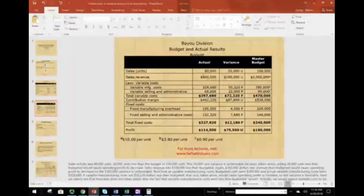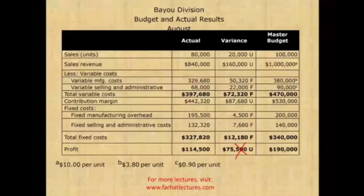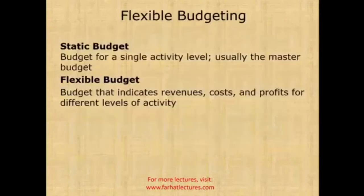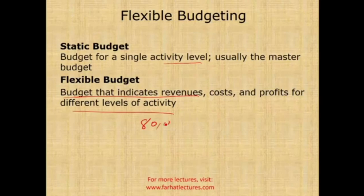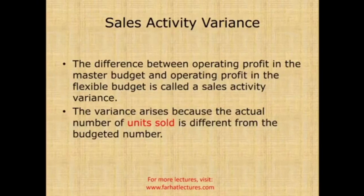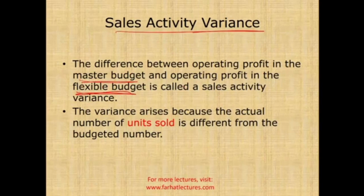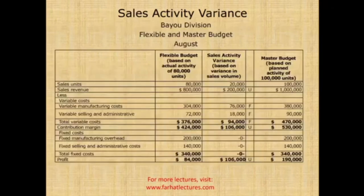Going back to the PowerPoint slides: the static budget comparison to actual is not very useful because you're comparing different activity levels — apples to oranges. The flexible budget is the key tool. We flexed the static budget from 100,000 units to 80,000 units. The sales activity variance is the difference between operating profit in the master budget and the flexible budget, caused solely by the number of units sold.